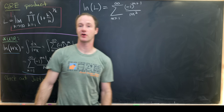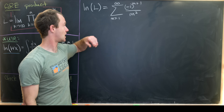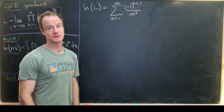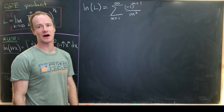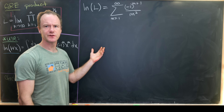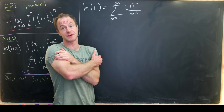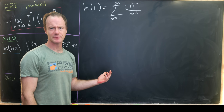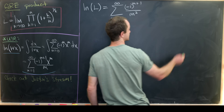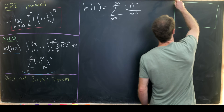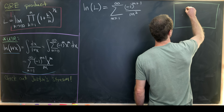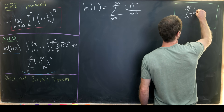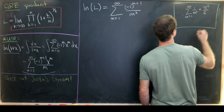So we've determined that the natural log of our limit L is the sum as m goes from 1 to infinity of (−1)^(m+1) / m². Now we need to determine the value of this sum. It suspiciously looks like the sum of reciprocal squares — the Basel problem — which we've calculated on the channel a few times. The result is: the sum as m goes from 1 to infinity of 1/m² equals π²/6.